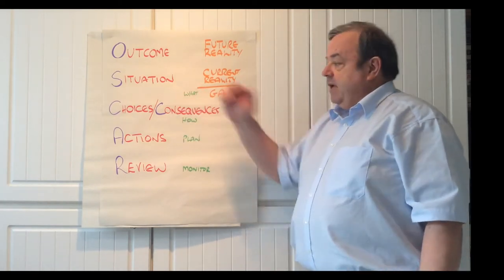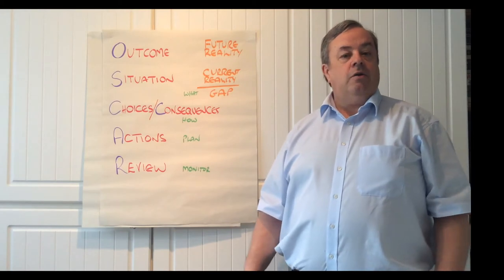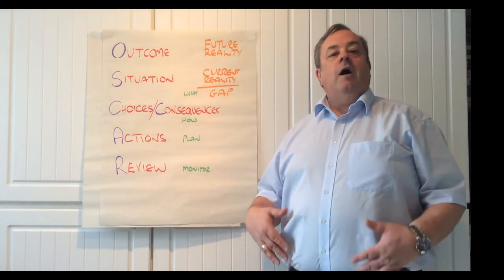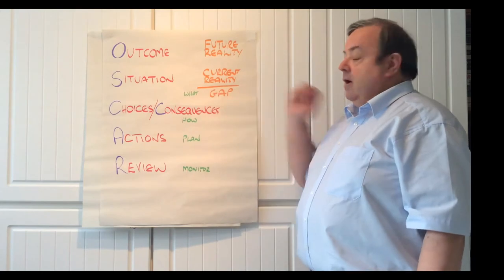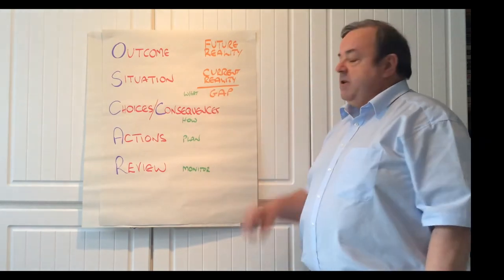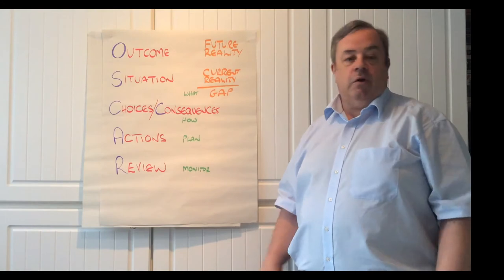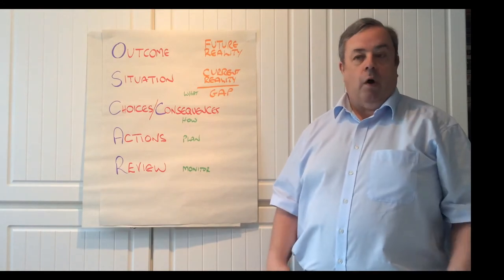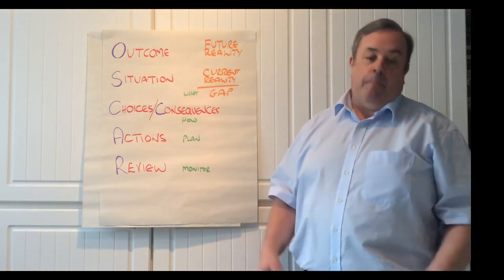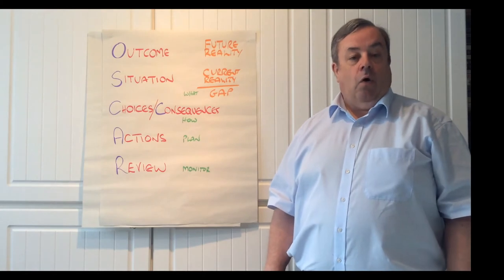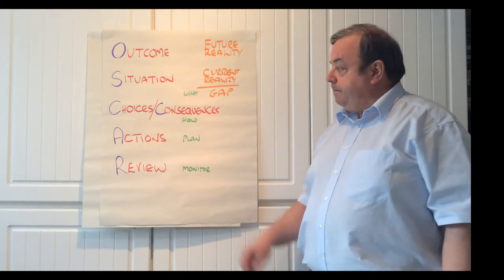This brings us to C — Choices and Consequences. What are the choices that the individual has to fix this gap? What could be some of the consequences? What are some of the constraints? What is the risk? What is my competence to take on this new way of working?